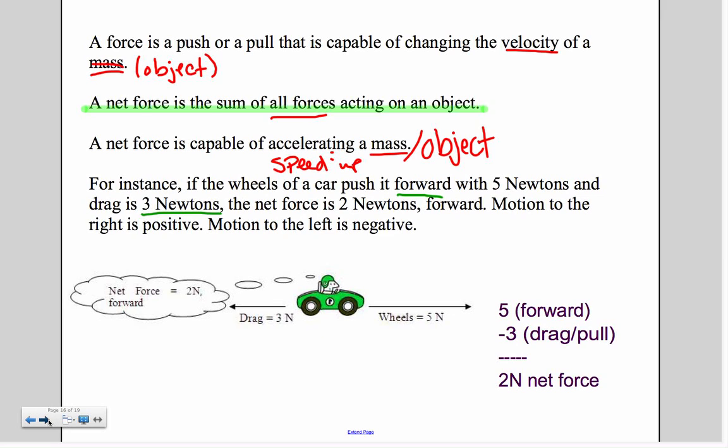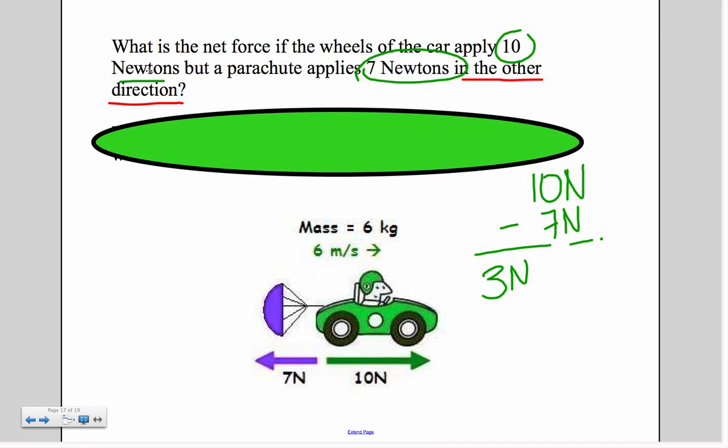So let's look at a couple of these. What is the net force if the wheels of the car apply 10 newtons, but a parachute applies seven newtons in the opposite direction? So here's my little car. I've got 10 newtons being applied by the tires forward. And because it's a parachute in the other direction, that means I'm going to subtract. Here's the math already done for us. So 10 minus seven, doing super math, is three.